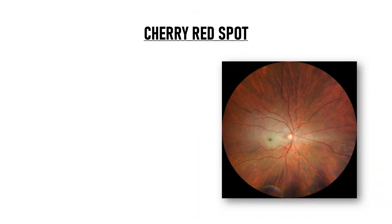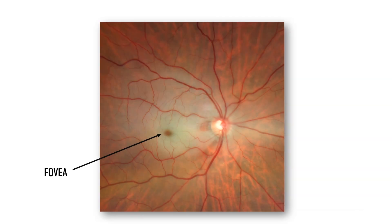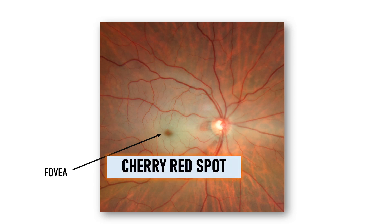Cherry red spot refers to the typical appearance of the macula in certain conditions where the reddish brown color of the fovea stands out in contrast to the pale or opaque retina surrounding it. Due to its red color like that of a cherry, this appearance is known as cherry red spot. This opaqueness of the retina can develop due to various reasons, and that is what we will learn in this video.